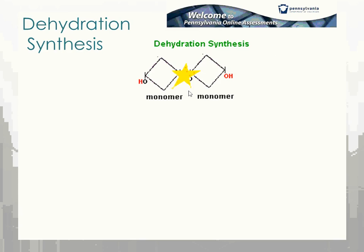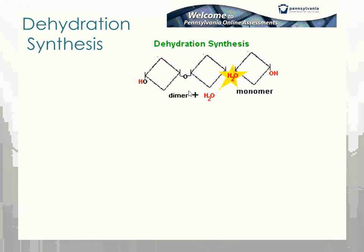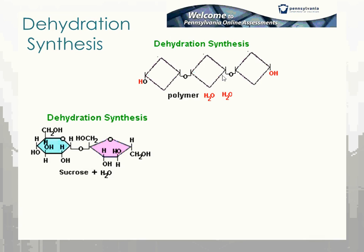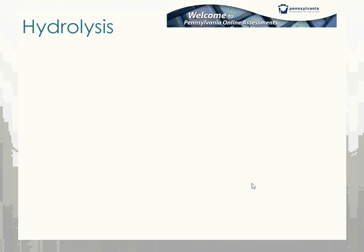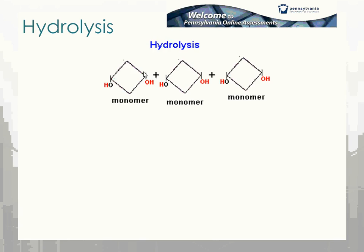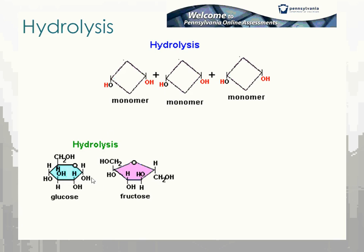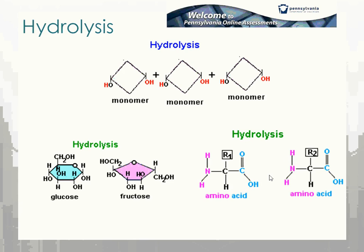In dehydration synthesis, the monomers come close, an enzyme comes in and takes away the water, and makes a chemical bond. This is done with carbohydrates, lipids, and proteins — water is pulled out to make the bond. On the flip side, with hydrolysis, we add water using an enzyme across a bond and that splits it up — OH and H splitting the monomers apart.